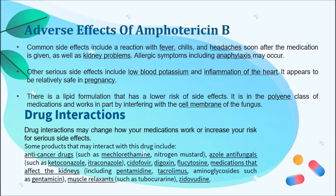Drug interactions may change how your medication works or increase your risk for serious side effects. Some products that may interact with Amphotericin B include anti-cancer drugs such as mechlorethamine and nitrogen mustard, azole antifungals such as ketoconazole and itraconazole, cidofovir, digoxin, flucytosine, medications that affect the kidneys including pentamidine, tacrolimus, and aminoglycosides such as gentamicin, and muscle relaxants such as tubocurarine.